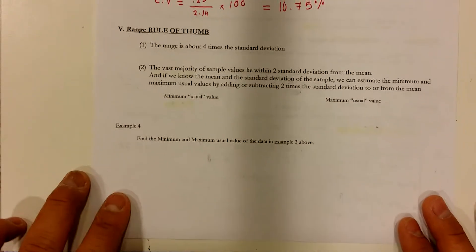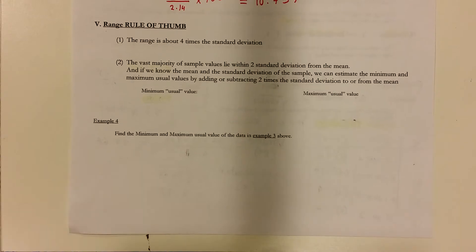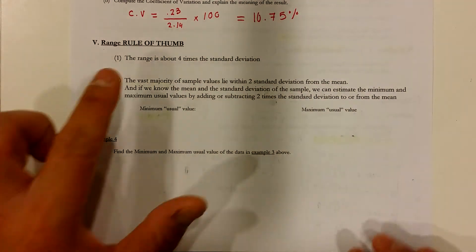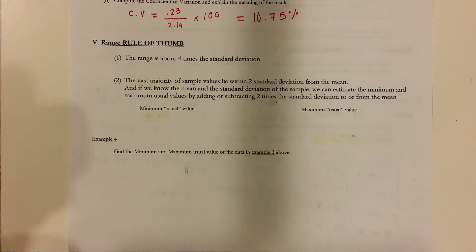So, the range rule of thumb, which is what this part is about. It's just a rule, so don't let this scare you. Think of this as just a rule of thumb. It tells us that if you need to calculate the standard deviation of a set of data quickly,